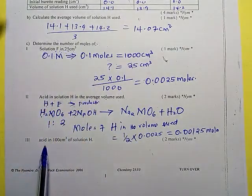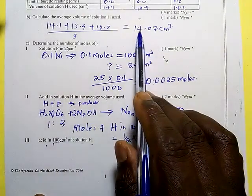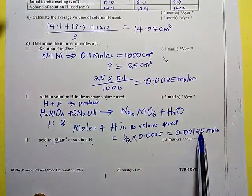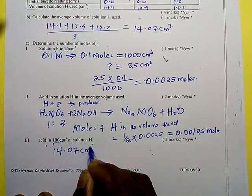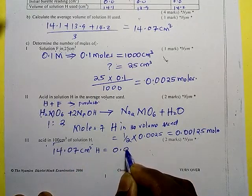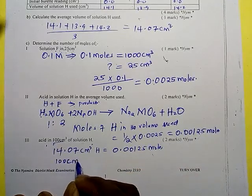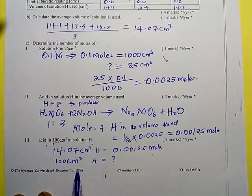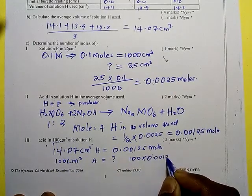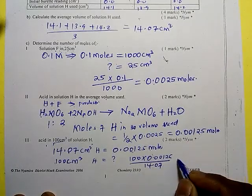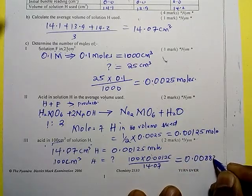Now determine the number of moles of the acid in 100 centimeters cubed of solution H. We know that 14.07 centimeters cubed of solution H contains 0.00125 moles, so 100 centimeters cubed contains 100 × 0.00125 ÷ 14.07 = 0.008884 moles.